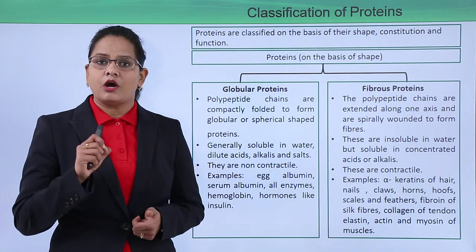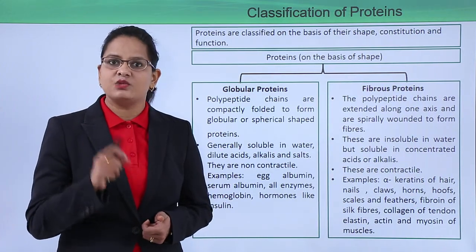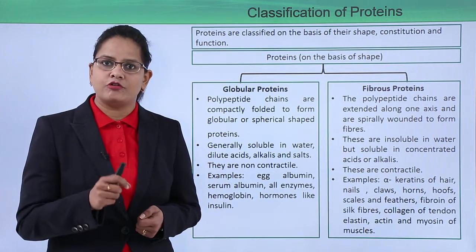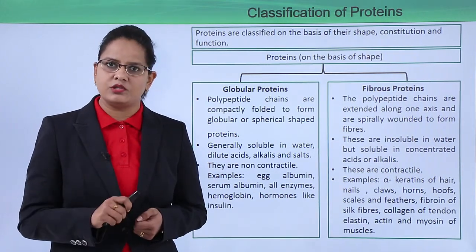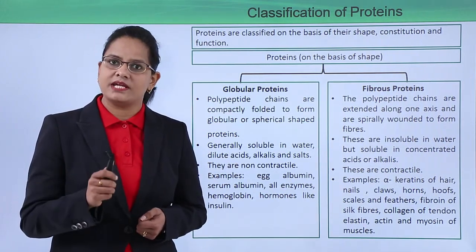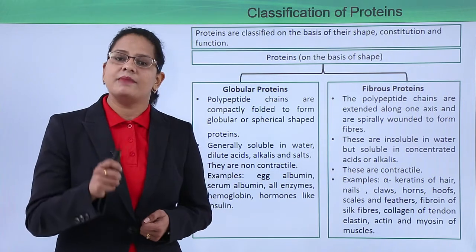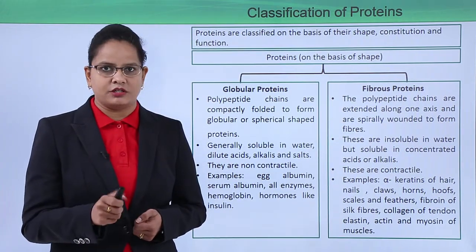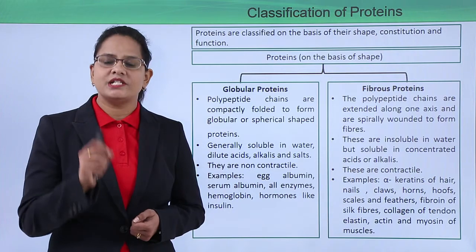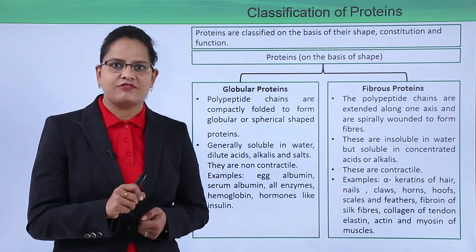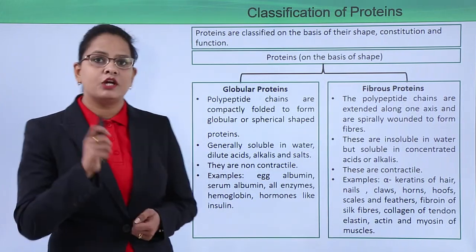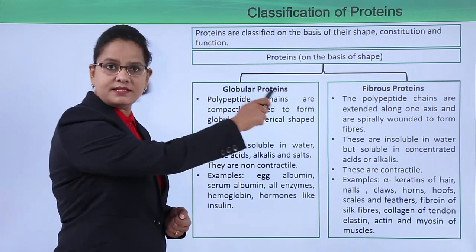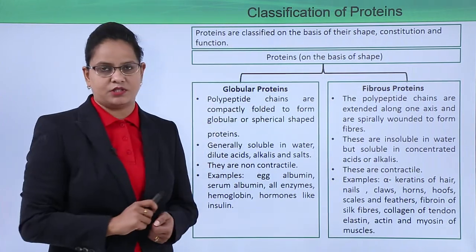We have millions of proteins in our body, so we need a method to distinguish one protein from another. Scientists have classified proteins on the basis of their shape, the chemical constituents present in them, and their function. On the basis of shape, proteins can be of two types: globular proteins and fibrous proteins.